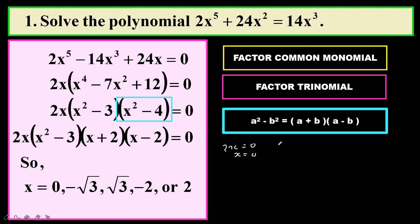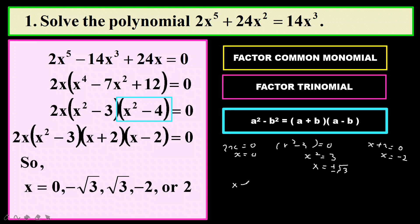For the second factor, x squared minus 3 equals to 0, so x squared equals to 3, meaning x equals to positive or negative square root of 3. Then x plus 2 equals to 0 gives x equals to negative 2. Lastly, x minus 2 equals to 0 gives x equals to 2. So I have already solved this polynomial. The first rule is: always check if there is any common monomial that you can factorize out before working on the equation.